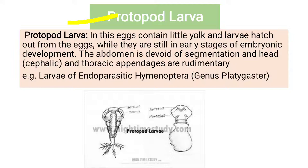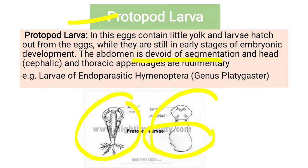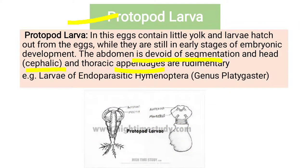Protopod larva is an immature larva. In this, the eggs contain very little yolk and the larvae hatch from the eggs while they are still in the early stages of embryonic development. They are therefore called immature. The abdomen has no segmentation, and the head and thoracic appendages are rudimentary. The abdomen is without any segmentation.